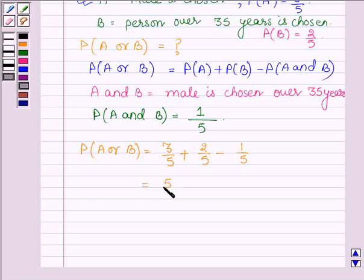So this is equal to 5 upon 5 minus 1 by 5, which is further equal to 4 by 5.